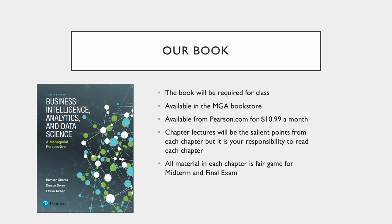First, I just want to remind everyone about the book. There is a book published in the syllabus, and we will be using it throughout the semester. It is required for class. You can get it in the MGA bookstore, or you can get it from Pearson.com as a rental for about 11 bucks a month. It's the fourth edition — that's the most recent — but they haven't updated it in a long time, and there's no real need to for our purposes. All of our lectures cover what I think are the salient points out of each chapter, but you will need to make sure that you are reading them because anything in them is fair game for our midterm, our final, and for anything in our assignments.